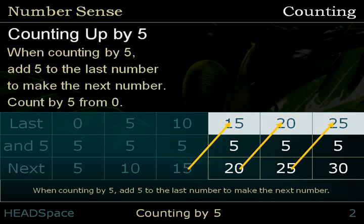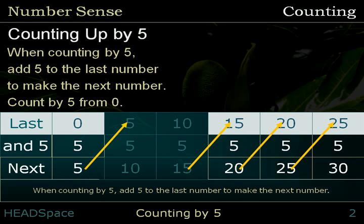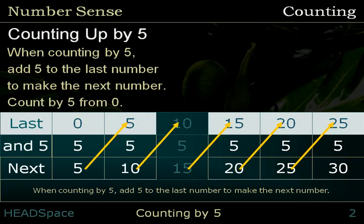Count by 5 from 0. Last number: 0. And 5. Next number: 5. Last number: 5. And 5. Next number: 10. Last number: 10. And 5. Next number: 15.